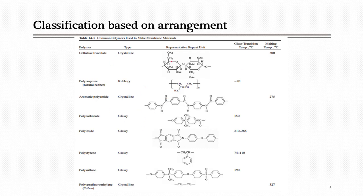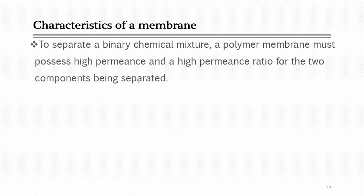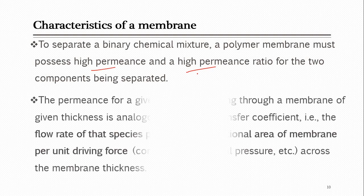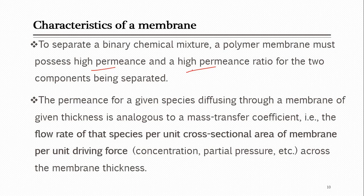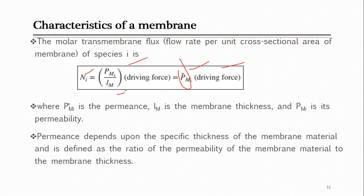Various polymers used for synthesizing membranes have different glass transition temperatures or melting temperatures in various ranges. When looking at permeation through a membrane, we want material that provides high permeance of one component of the feed and overall high permeance ratio. This permeance is analogous to the mass transfer coefficient — molar flux through the membrane equals permeance multiplied by driving force, and permeance is the ratio of permeability over membrane thickness.